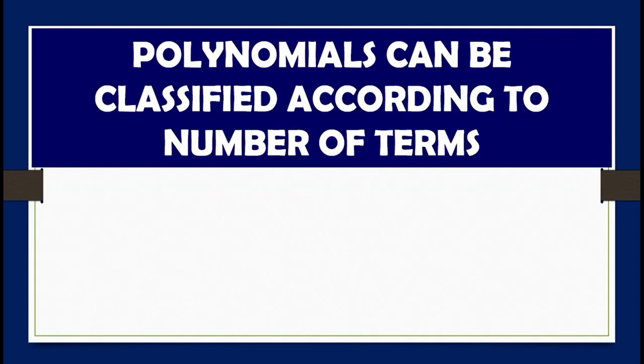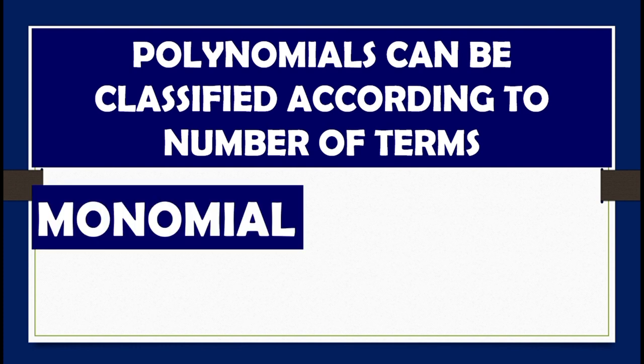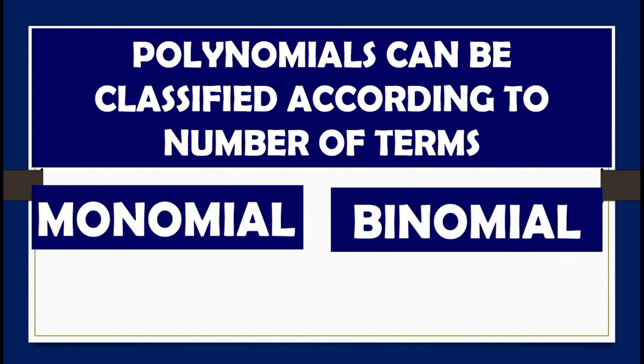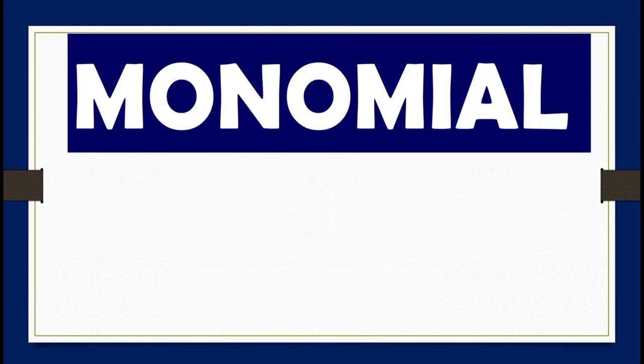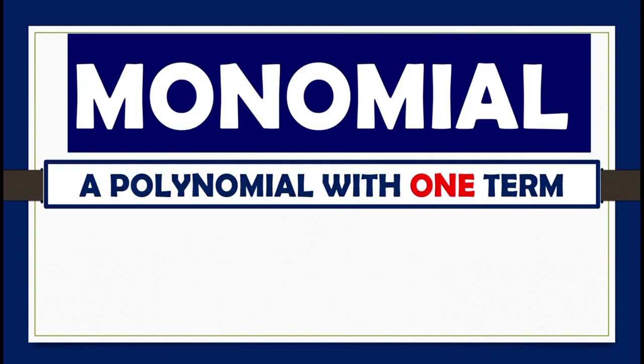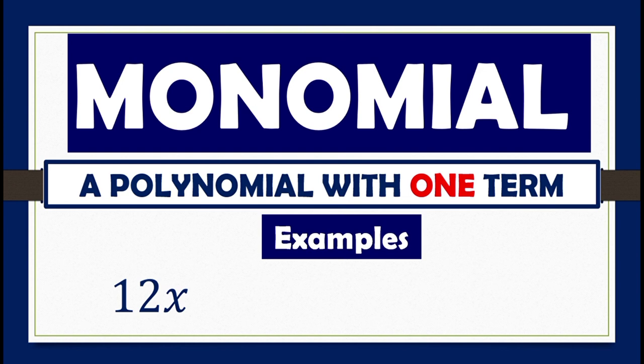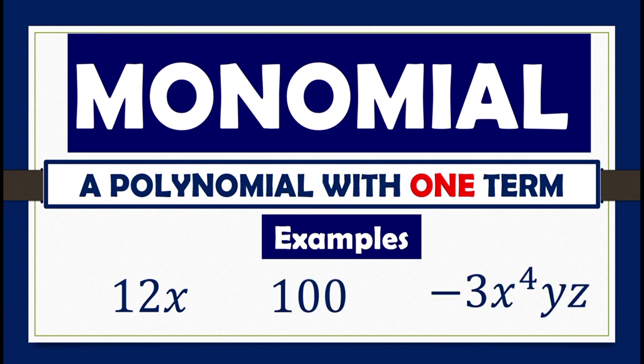Polynomials can be classified according to number of terms. They can be a monomial, binomial, or trinomial. A monomial is a polynomial with one term. Examples: 12x, 100, negative 3x to the fourth yz.